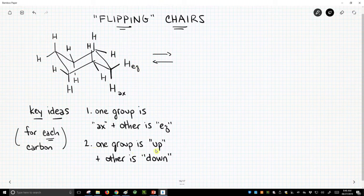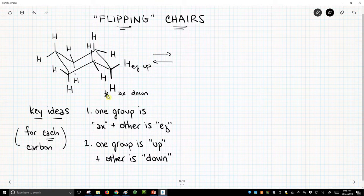Furthermore, each group can be classified as either up or down. This axial group, the bond points down, so this is down. And the equatorial group, it's a gentle up, but that is pointed up. Now I'm going to put a star by this one, and let's put an x by that one.